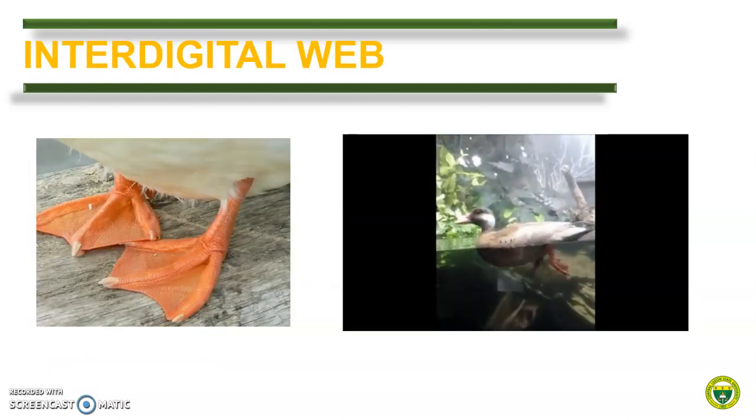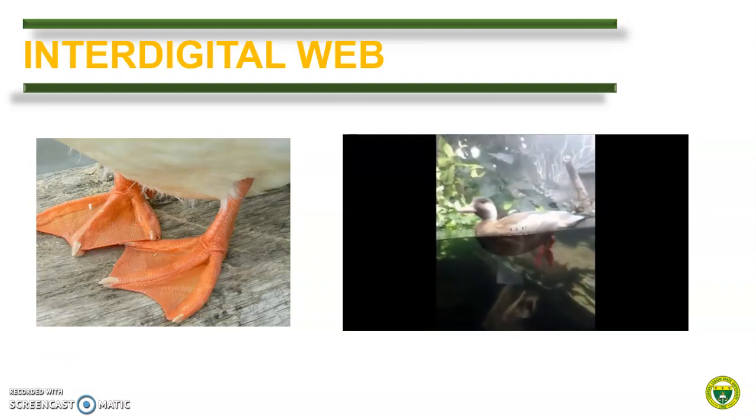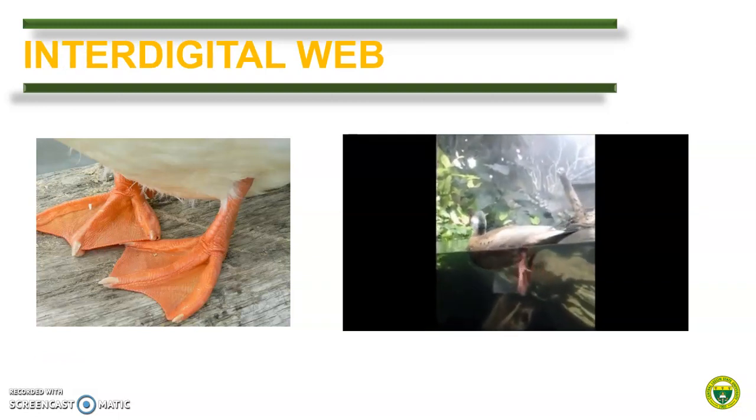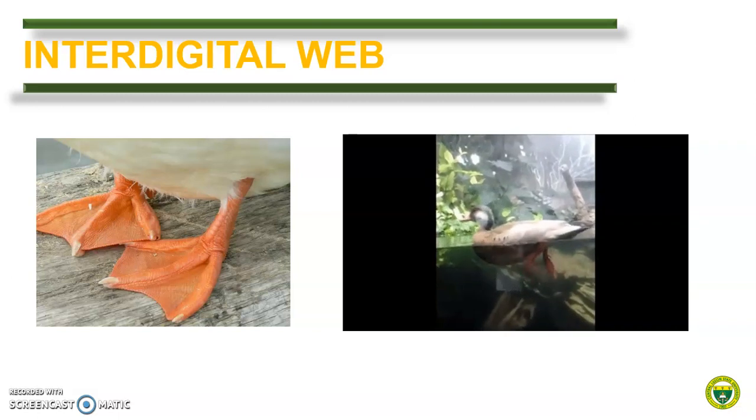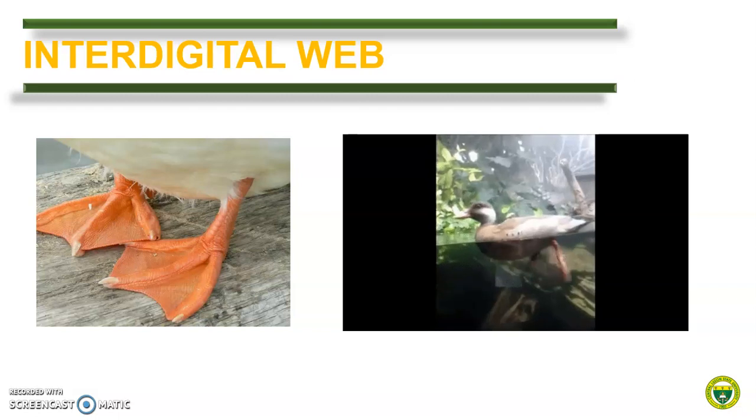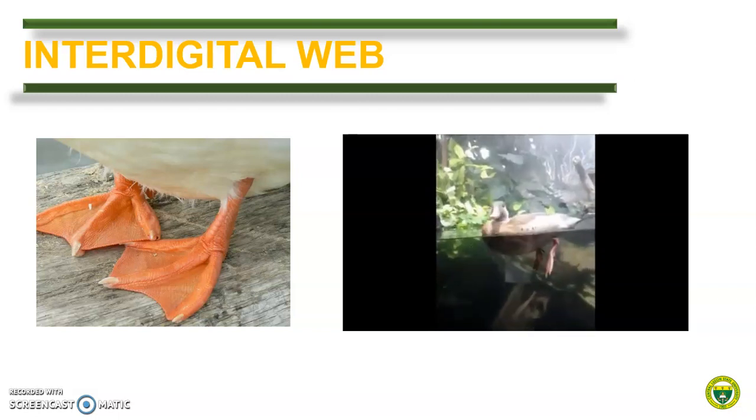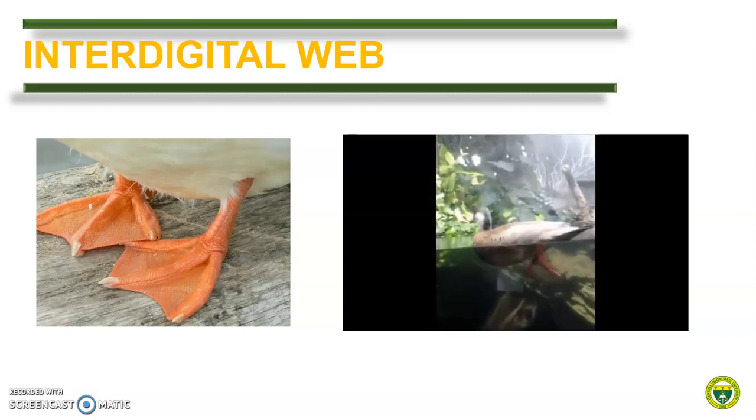In some birds, in particular the waterfowl like ducks, interdigital webs are well developed. The structure is located at the spaces between the second, third, and fourth toes of waterfowl that facilitates swimming as shown here.